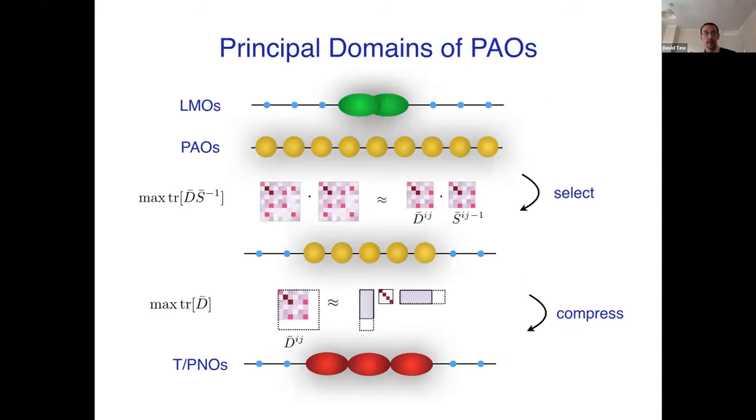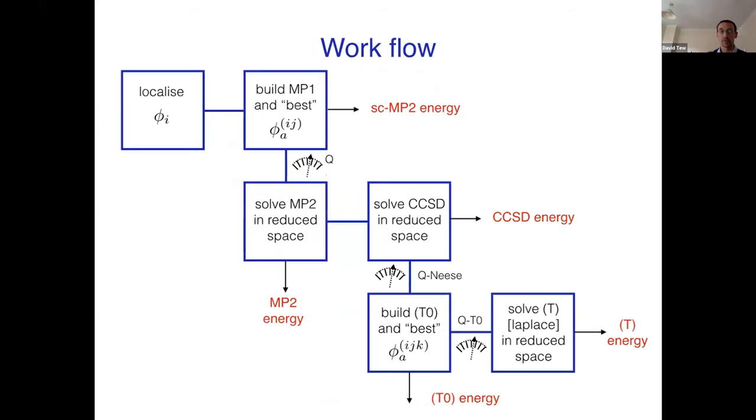So the scheme then overall is that you've localized your occupied orbitals - this is a cartoon. So you have a set of localized occupied orbitals. The yellow line is a set of projected atomic orbitals that could describe the correlation of that pair. You maximize this trace to select a subset of PAOs that maximize that trace. And again, that has a threshold which determines how big that domain is, which is big for important pairs but small for less important pairs. Then from that subset, you do a compression down to either the pair natural orbitals or the triple natural orbitals. So at every point where you're doing this compression of the orbital space, you're also selecting a subspace of PAOs for that domain. And that greatly reduces the pre-factor of many steps and it reduces the scaling of other steps.